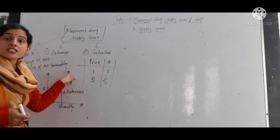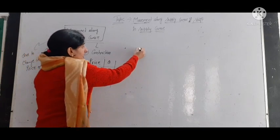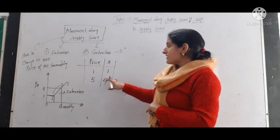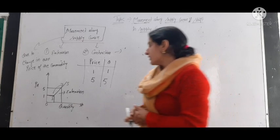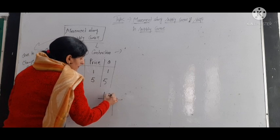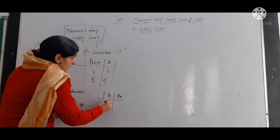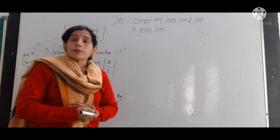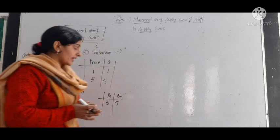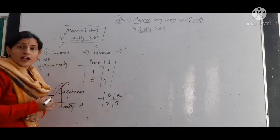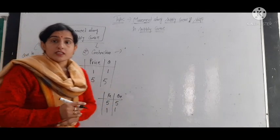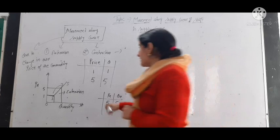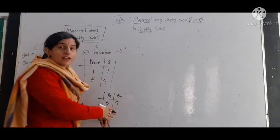Extension is due to change in the own price of the commodity. Now the second case is contraction, which is also due to change in the own price of the commodity. When the price of the commodity decreases, then the quantity supplied also decreases. There is a positive relation between price and quantity supplied. So when PX is 5, the quantity supplied is 5. When the price decreases and becomes 1, the quantity supplied also decreases and becomes 1 — this is contraction of the supply curve.